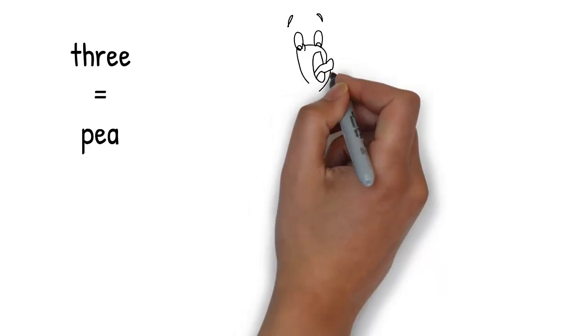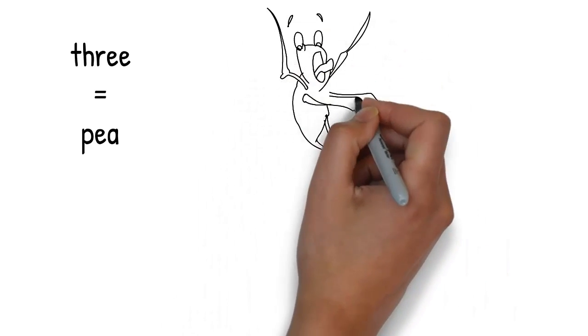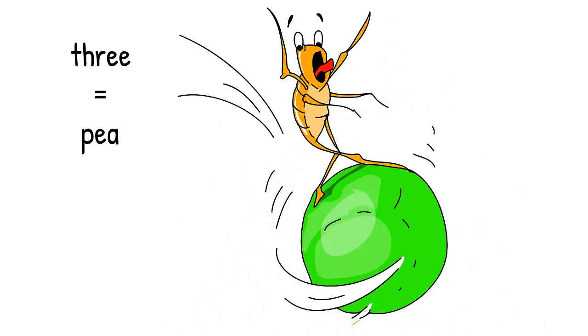The flea flies through the air and lands on a giant green P, and starts to lose its balance. P reminds you of 3.